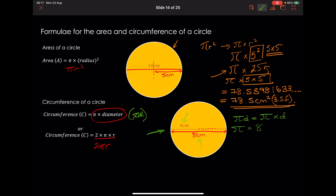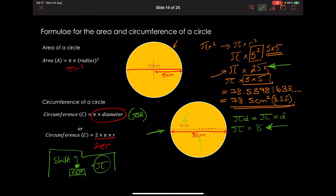To get pi on your scientific calculator, press Shift and then the 'times 10 to the power of x' button at the bottom — that gives you pi. You can then press times 25 or times 8 depending on the question. So pi times 8 gives 25.1327…, which is 25.1 centimetres to three significant figures — note this is just centimetres, not centimetres squared, because it's a perimeter.